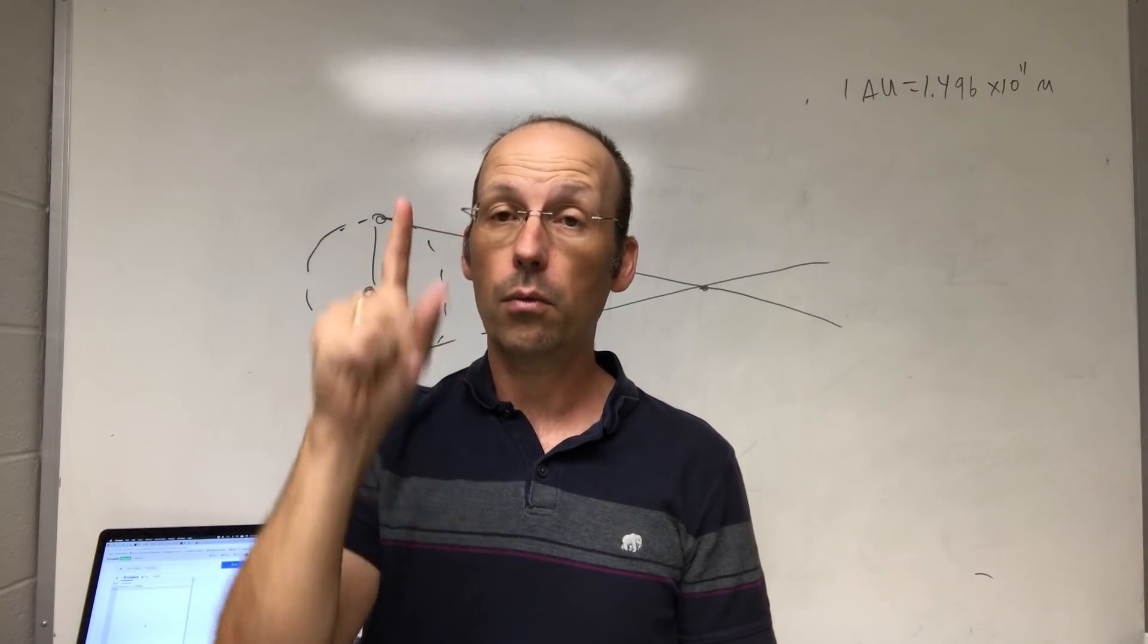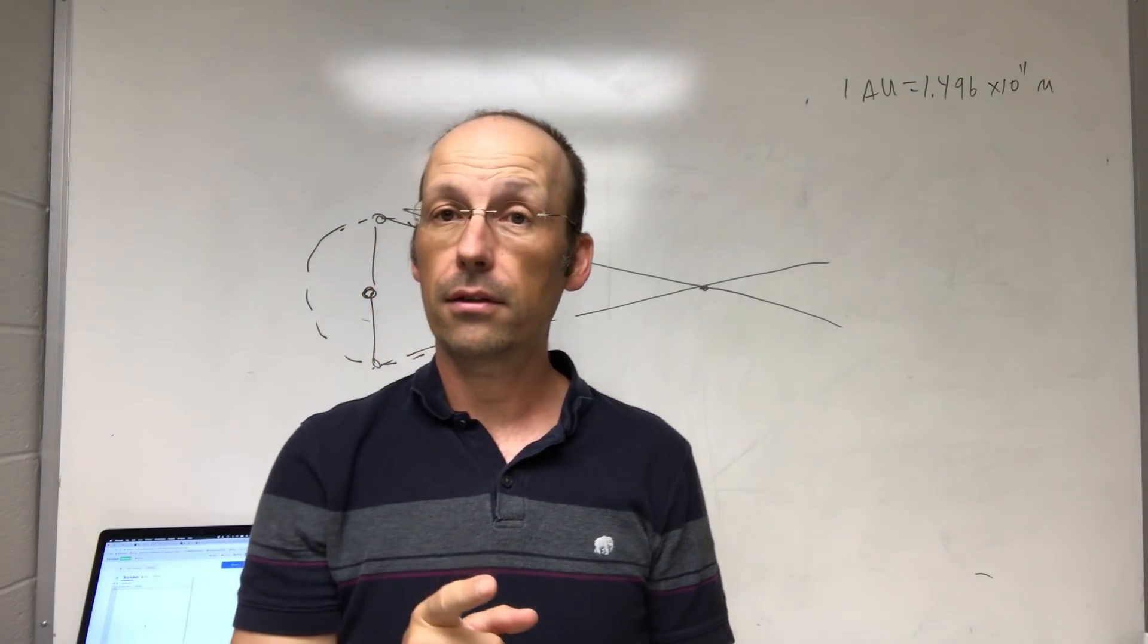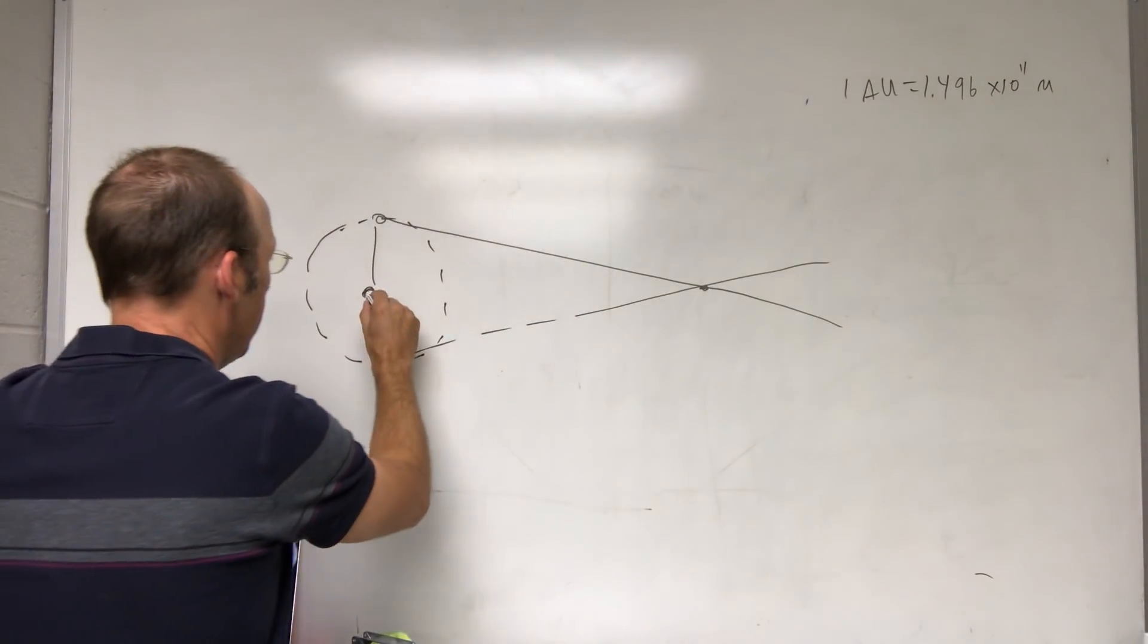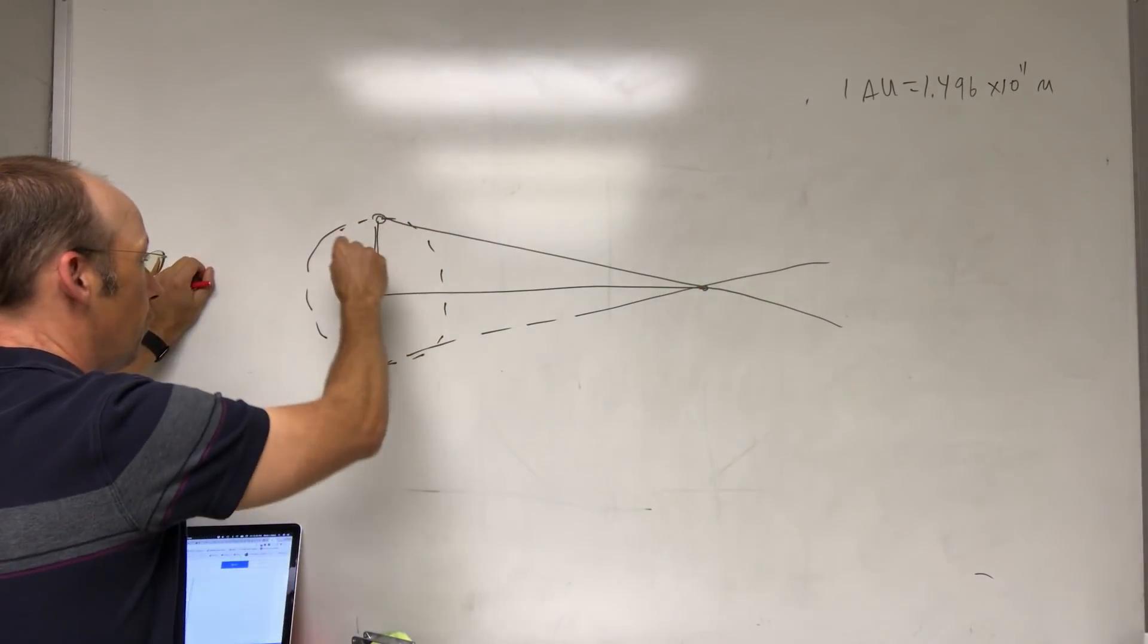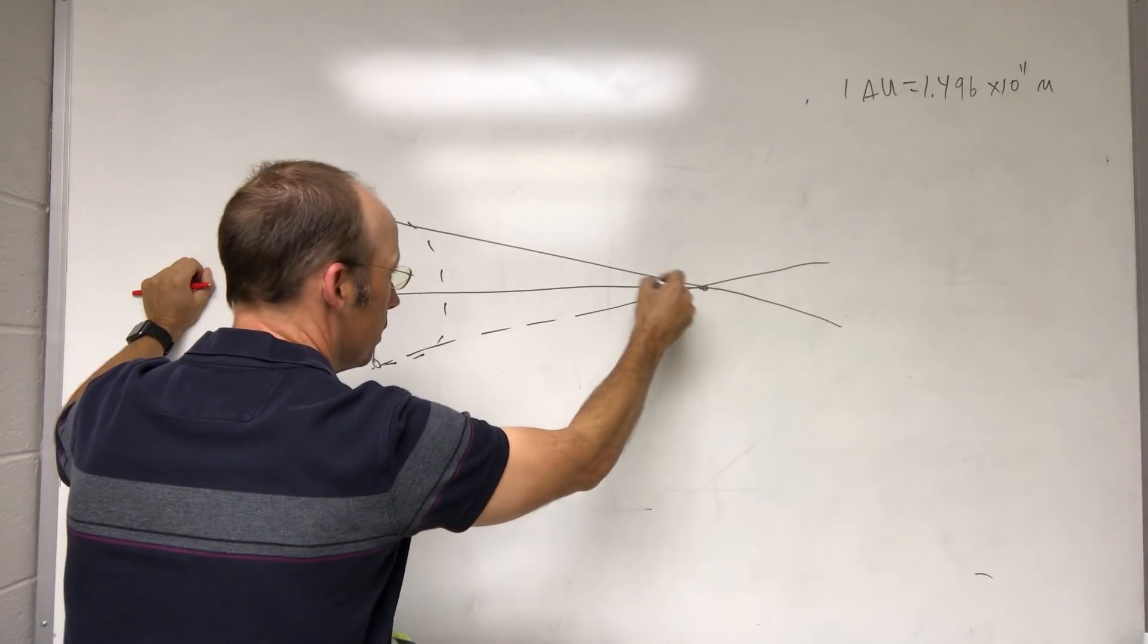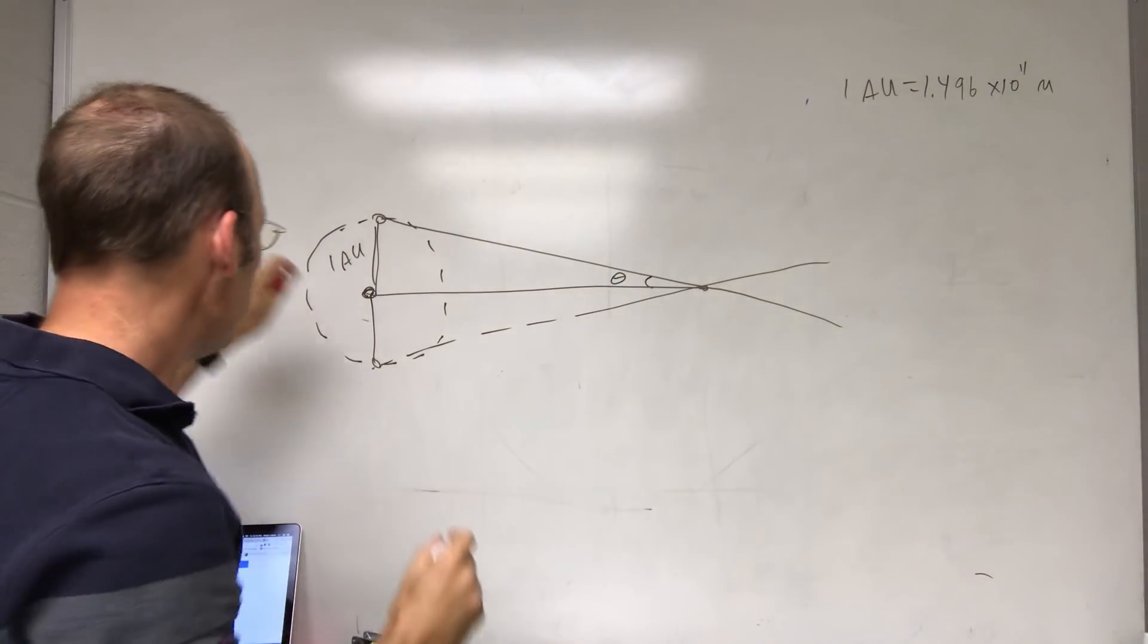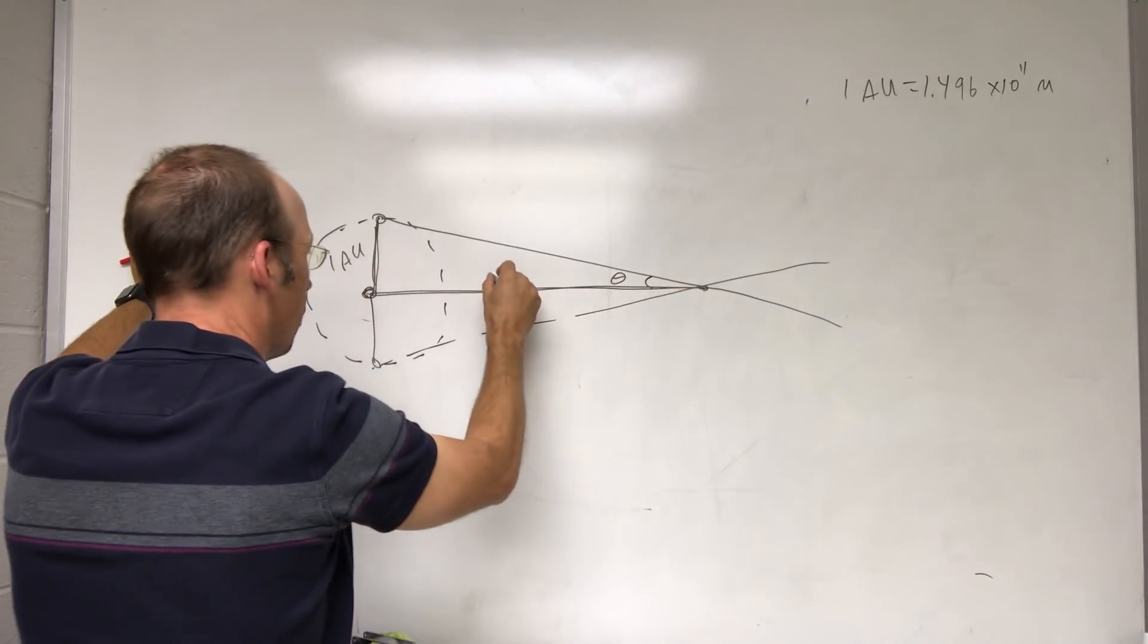We need two things. We need the size of the shift and the size, the size of the angular size of the shift and the distance shifted. So if I look at right here, I have a right triangle. This is the radius of the earth, one AU. And this theta is the shift angle.